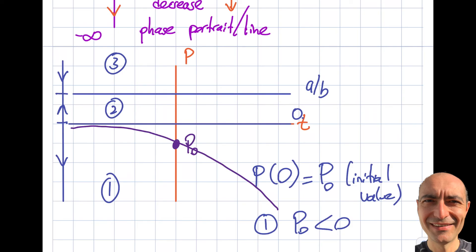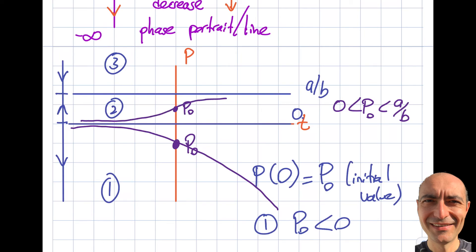In the second case, p₀ falls somewhere between 0 and a/b. So p(t) is bounded both above and below — they are like walls I can't cross. I know that this region is increasing. As I increase t, I cannot cross the upper wall. The only option is that the solution is asymptotic to a/b from below. So it's increasing and I'm bounded above and below.